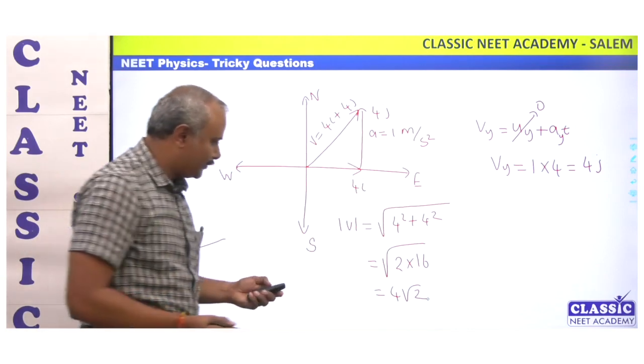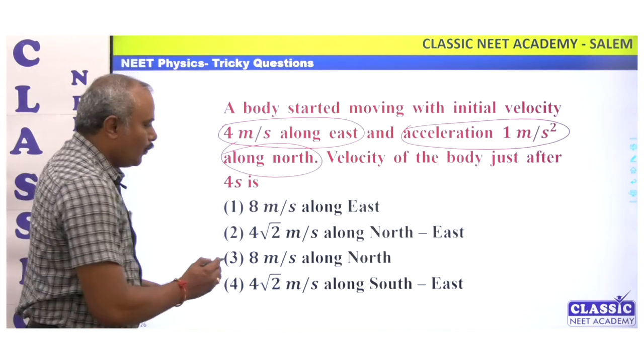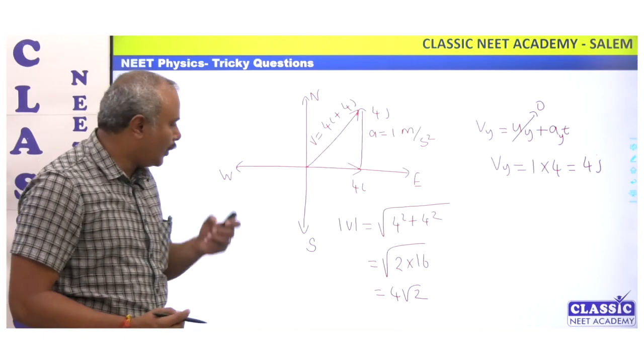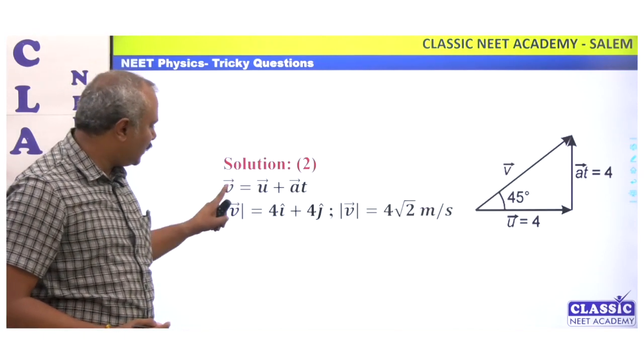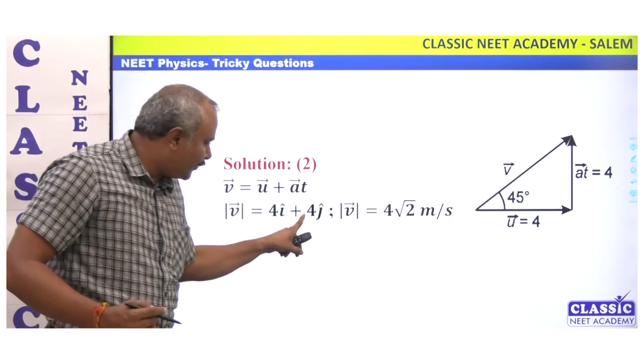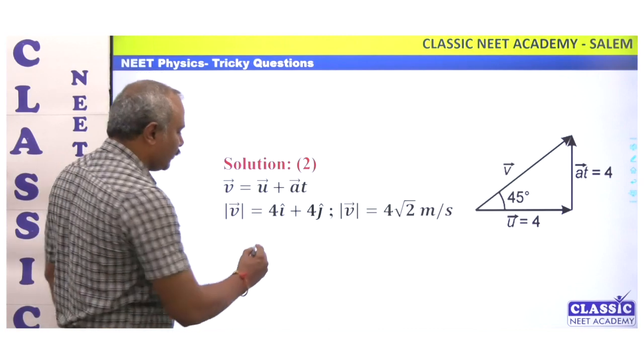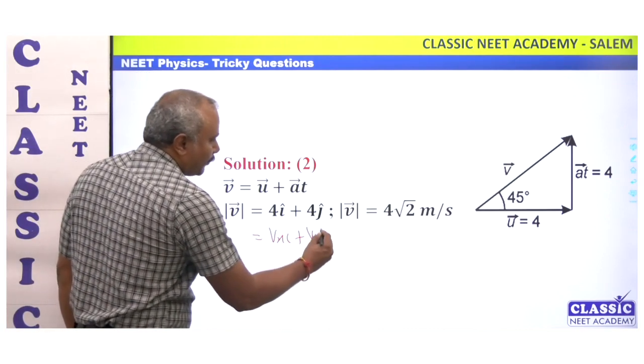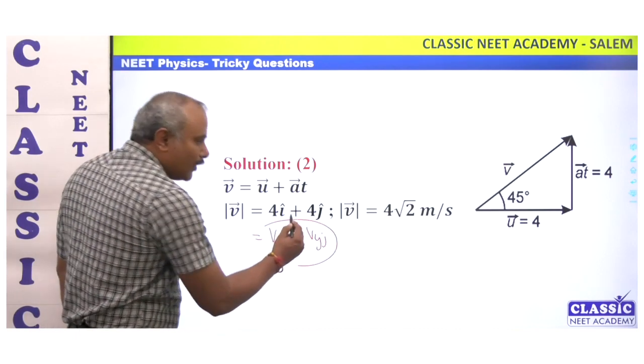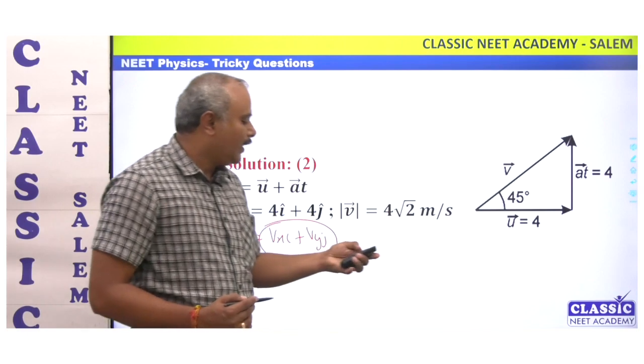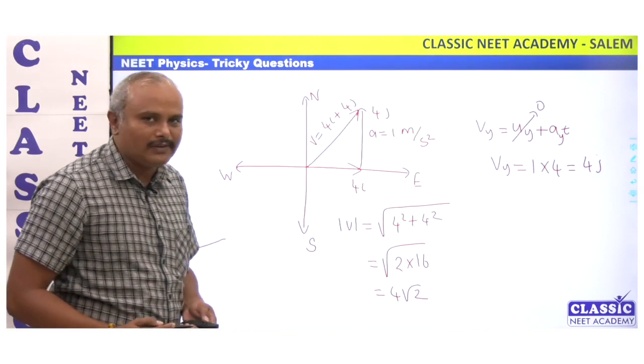4 root 2, and the direction is north-east. The answer is 4 root 2 along north-east. You can see that u plus at: u is 4i and at is 4j. This method gives us vx i plus vy j. The correct answer is 4 root 2 meters per second in the north-east direction.